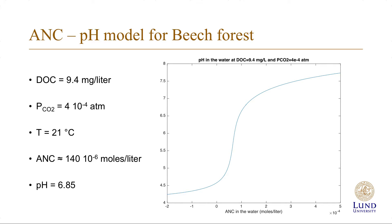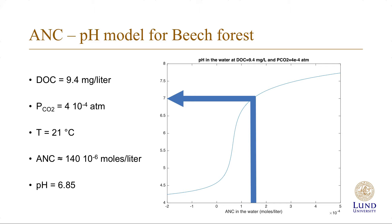In the previous episode, we saw that the ANC in this beech forest water is about 140×10⁻⁶ moles per liter and the pH is 6.85. In the diagram, we can pick the value of the ANC and look at the corresponding pH, and we see that it's about 7, which is slightly higher than the measured pH. Still, the value predicted by the model is very close to the measured value.